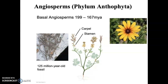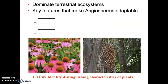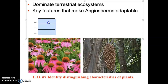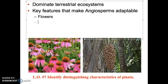Angiosperms are by far the dominant plant group on Earth today. Look out your window — the vast majority of plants you see are angiosperms, or flowering plants. They dominate terrestrial ecosystems and are incredibly adaptable. There are four key features that make angiosperms adaptable. The first key feature is flowers. Flowers connect most angiosperms to specific pollinators — not all use animal-based pollinators, but flowers are a huge advantage.